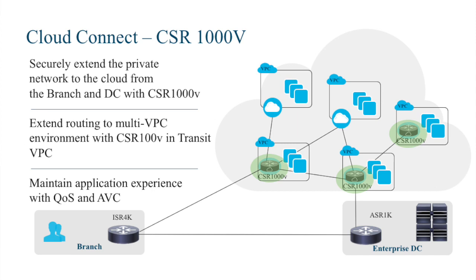Let's look at use cases in cloud connect. The first: I have branches and data centers — you can see our 4K routers and SR1K here — and I want to extend into an Infrastructure as a Service environment, such as AWS VPCs or Azure VNets. The CSR 1000V enables us to install an instance of IOS inside a VPC — the exact same IOS I have on my branch and data center — to create a secured VPN into the VPC and connect multiple VPCs together.